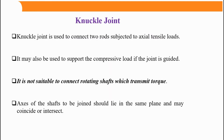Knuckle joint is a mechanical joint used to connect two rods that are subjected to axial tensile loads. This is the major function — many students are confused about this. It is used to join two rods or shafts subjected to tensile load where a very small misalignment is permissible. It may also be used to support compressive load if the joint is guided with some additional mechanical arrangement.